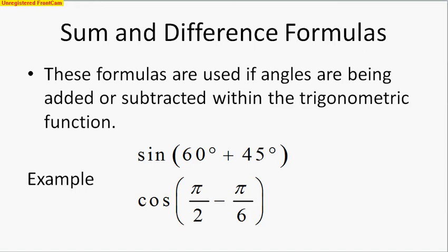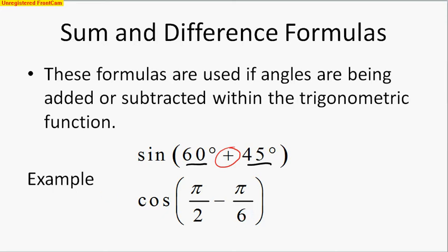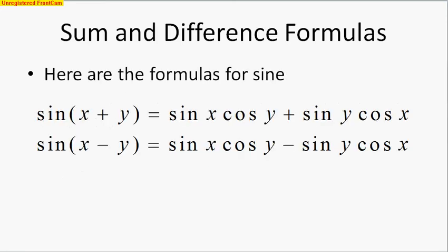What are they for? These formulas are used if angles are being added or subtracted within the trigonometric function. For example, sine of 60 degrees plus 45 degrees — we clearly see addition going on inside the trig function. Here's another one with radians: cosine of pi over 2 minus pi over 6. So without further ado, here are our sum and difference formulas.